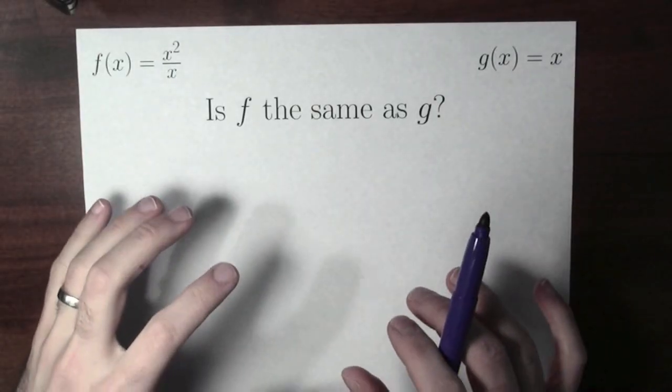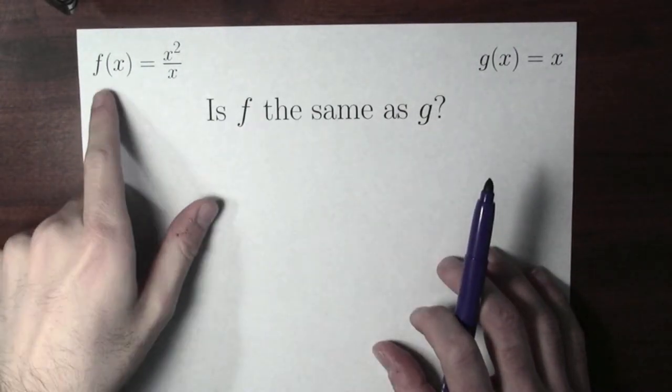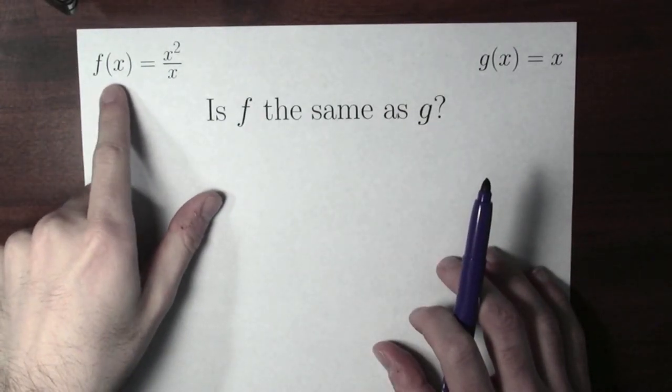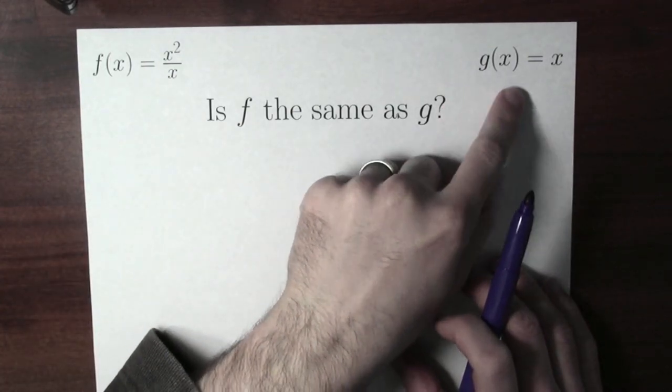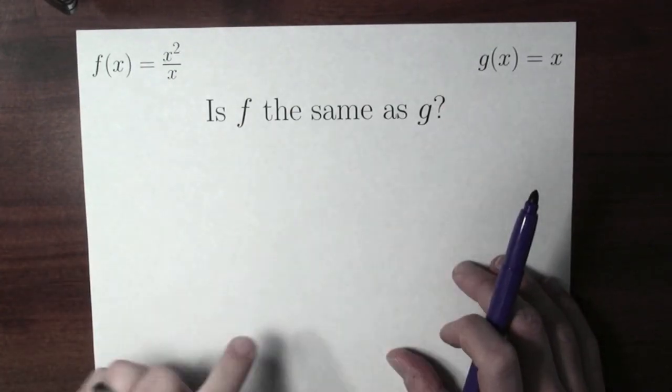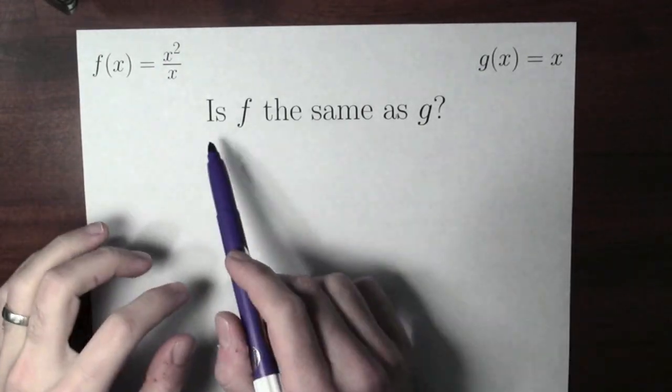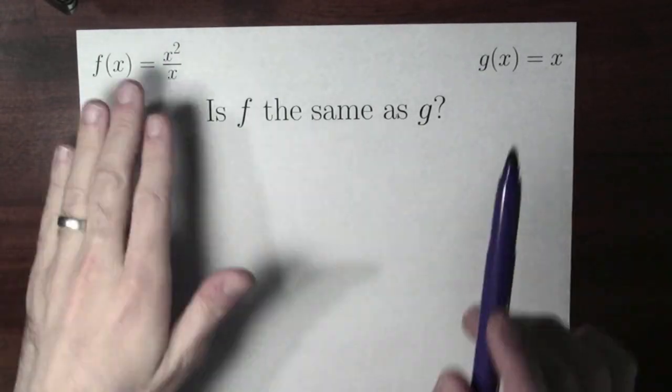Here's a much more subtle example. Again, I've got two functions. f is defined like this. f of x is x squared over x. And g is defined like this. g of x is just x, the identity function. Same question, is f the same as g? Are these the same function?